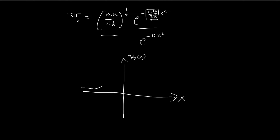So essentially your graph will look something like a Gaussian bell curve. The x-axis is the asymptote, and on both sides — as you tend toward negative infinity and toward positive infinity — the graph will tend closer and closer toward the x-axis. This is what psi naught would look like.